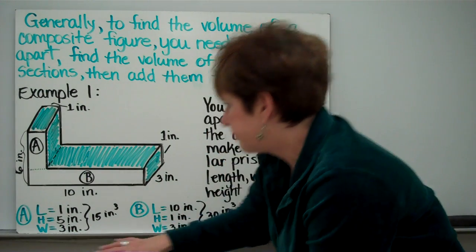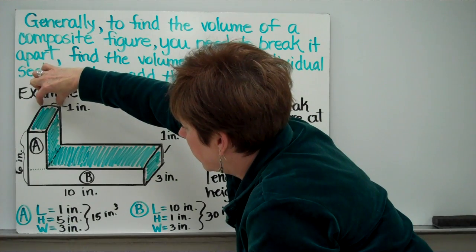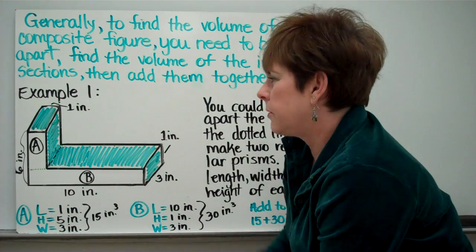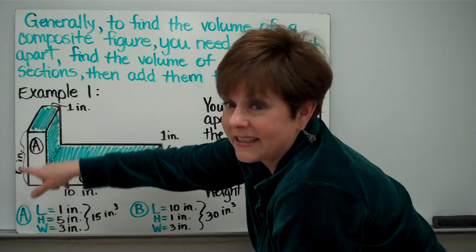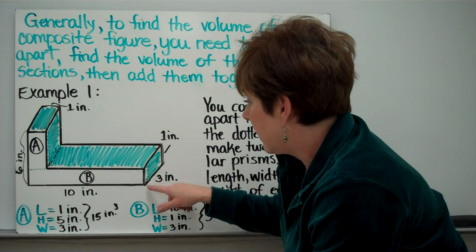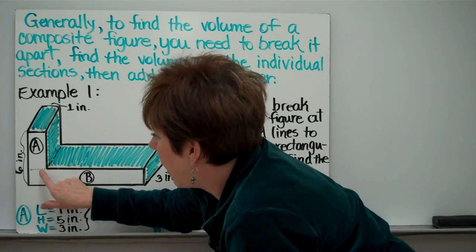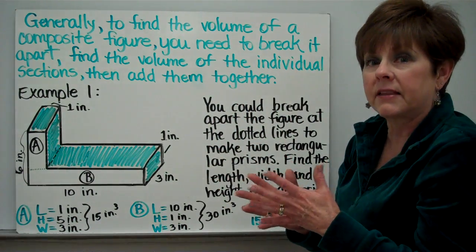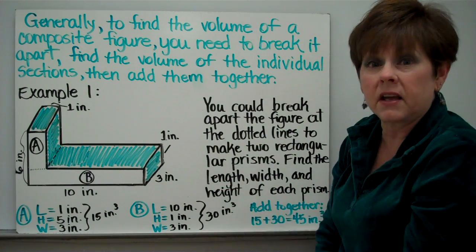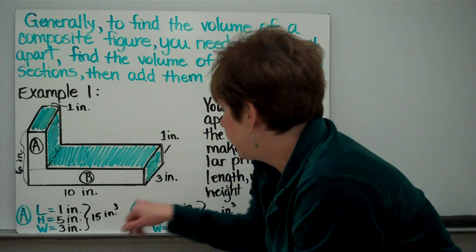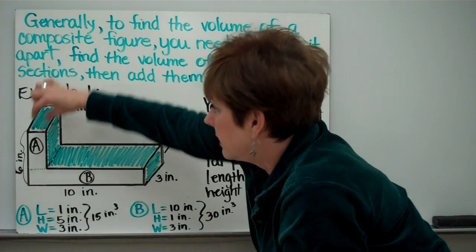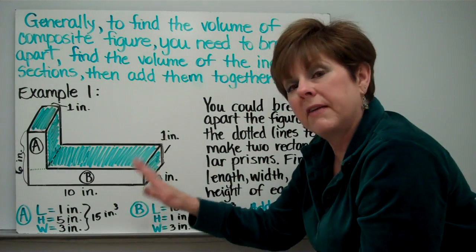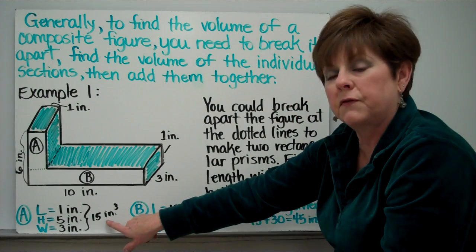Let's look at section A. We know that this is one inch in length — it tells you it's one inch. The height: you may ask how we get five here when it says six. Good question. This says it's one inch, so if this section is one inch and I take one away from six, I will get five. I have to think logically like that to make this work. The width is three inches — if it's three inches down here, it's three inches here.